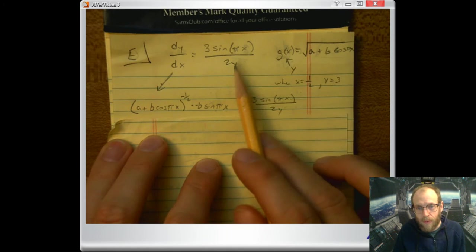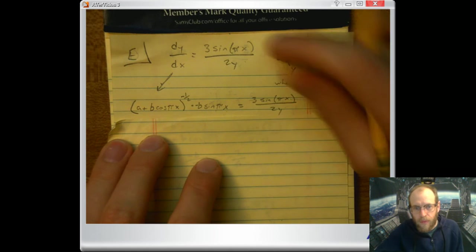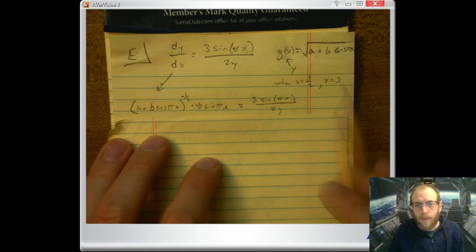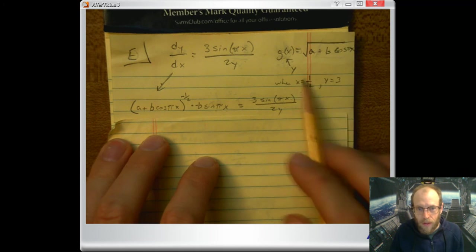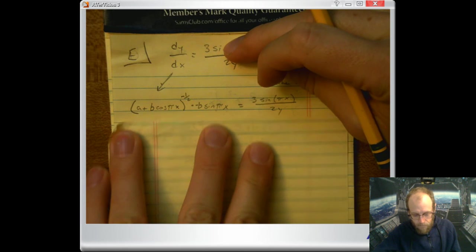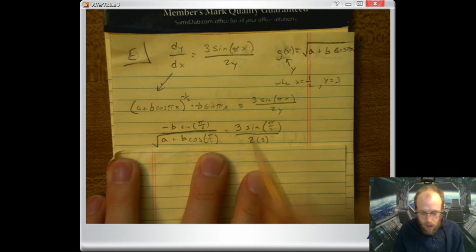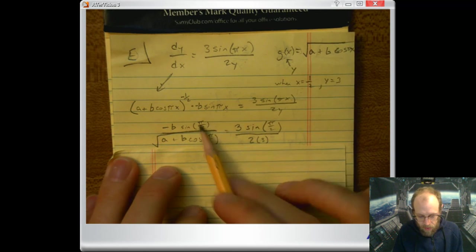Now I'm going to take those values for x and y and plug them in. So x is 1/2, so that gives us π over 2 there and there and there.